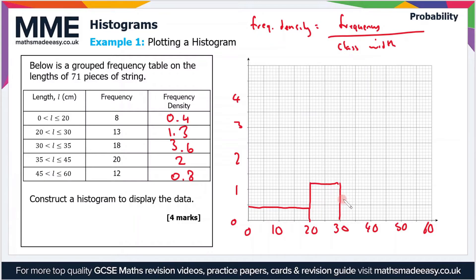The next one is from 30 to 35, so that's a much smaller bar in terms of width, but it has a frequency density of 3.6. We'll go all the way up to 3.6 there.